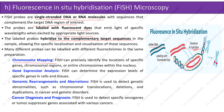Applications of FISH include: chromosome mapping — precisely identifying the locations of specific genes, chromosomal regions, or entire chromosomes within the nucleus; gene expression analysis — determining the expression levels of specific genes in cells and tissues; genomic rearrangements and aberrations — detecting genetic abnormalities such as chromosomal translocations, deletions, and duplications in cancers and genetic disorders; and cancer diagnosis and prognosis — detecting specific oncogenes or tumor suppressor genes associated with various cancers.